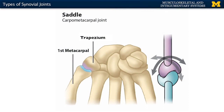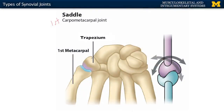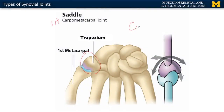Saddle joints: one of the articulating surfaces looks like a saddle, and the other bone looks like it's sitting within the saddle. The best example is your first carpometacarpal joint — thinking of your first digit or thumb, this metacarpal where it's articulating with your trapezial bone, one of your carpal bones. There's quite a bit of movement allowed here: flexion, extension, abduction, and adduction. Any time you have those four movements, that allows for circumduction, which allows you to move in a circular pattern.